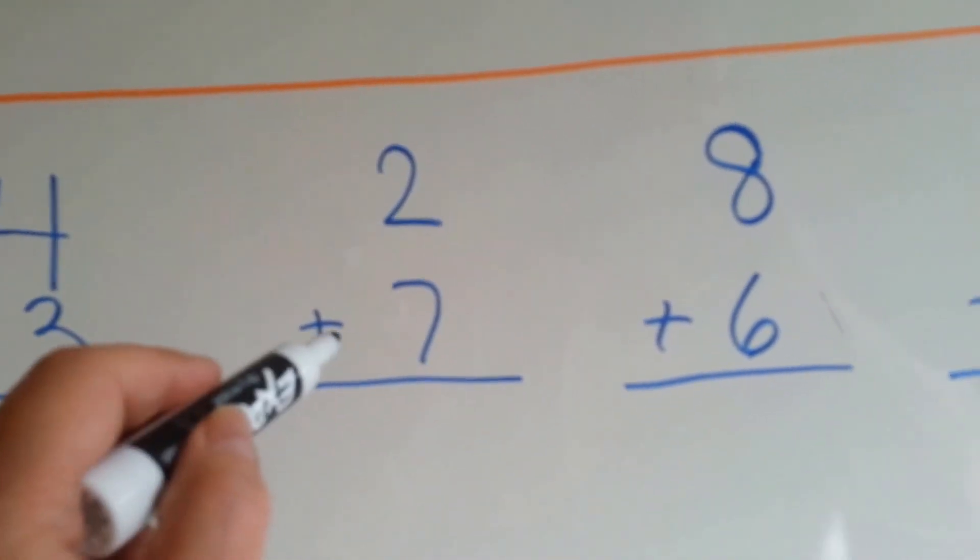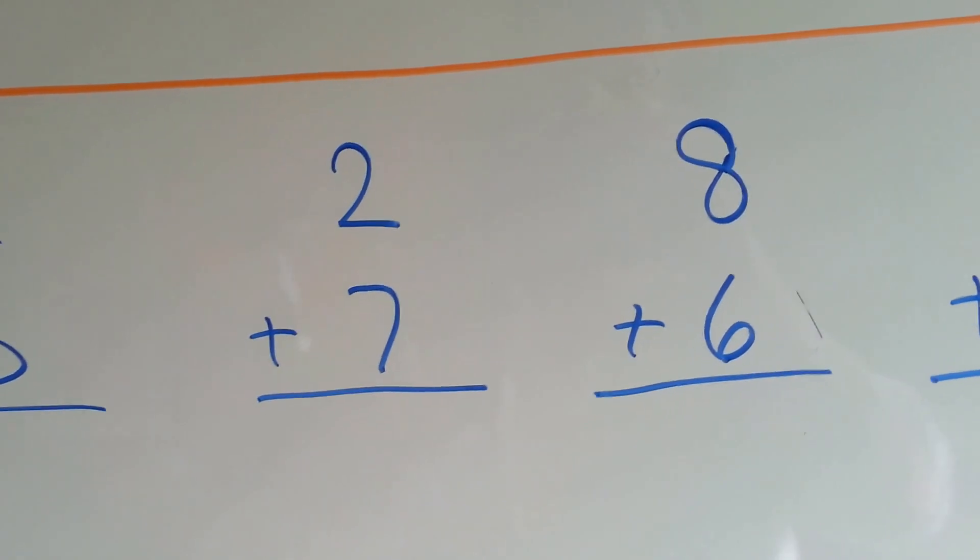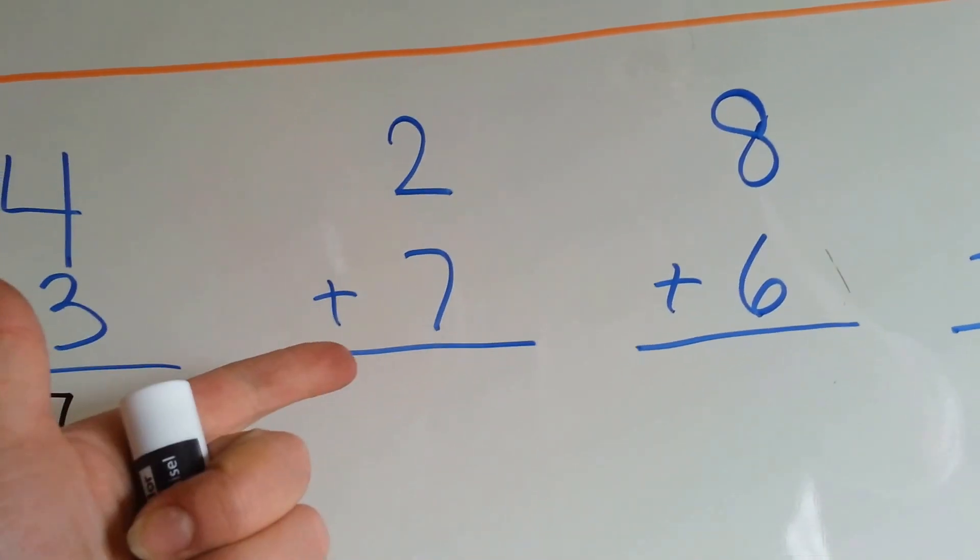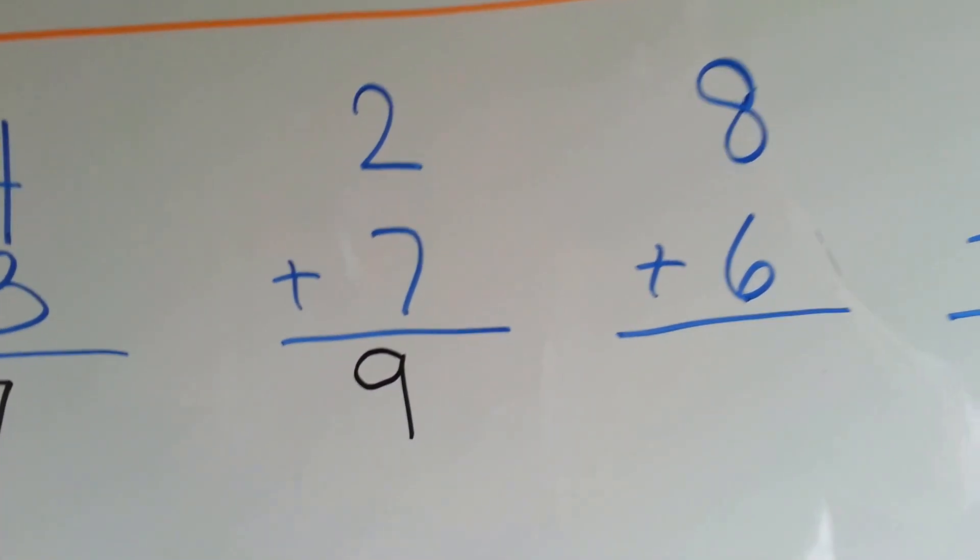2 plus 7. Start with the bigger number, 7, and add the two small ones. 7, 8, 9. Nine. 2 plus 7 is 9. Did you know that one?